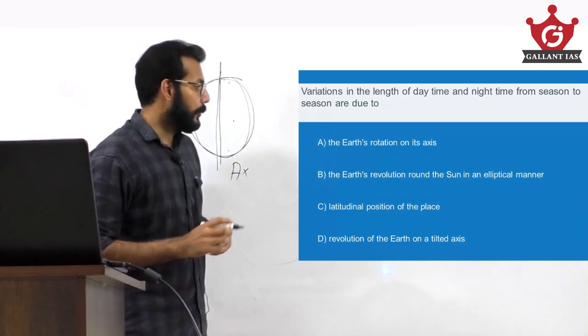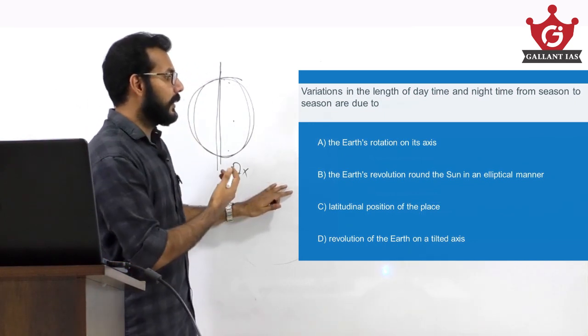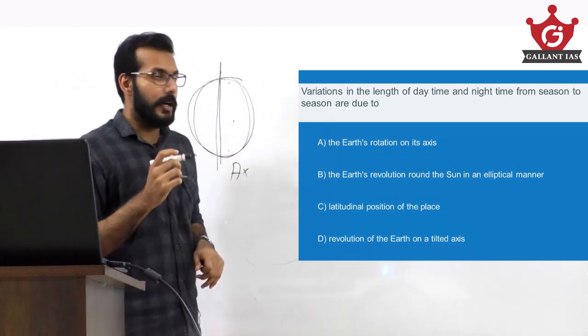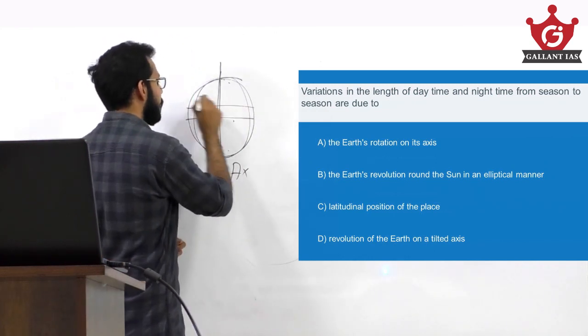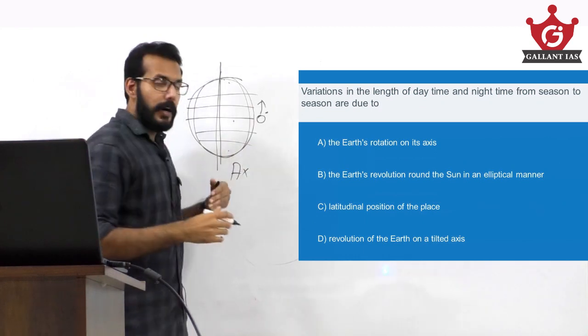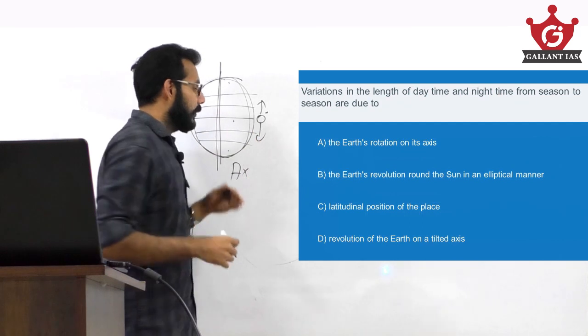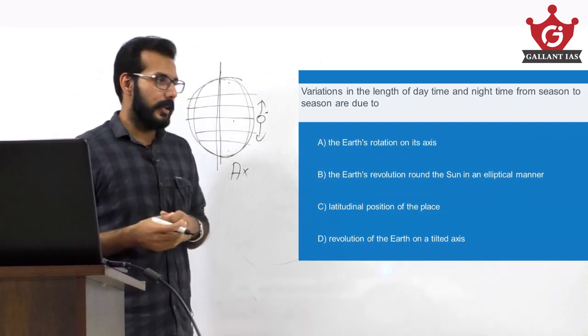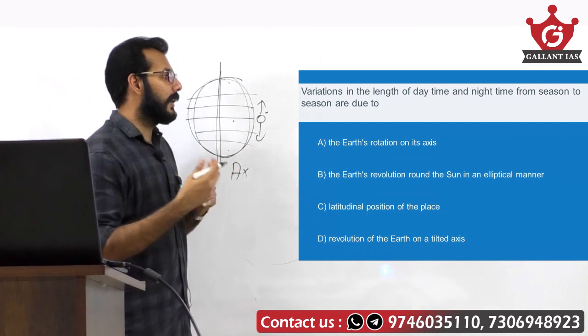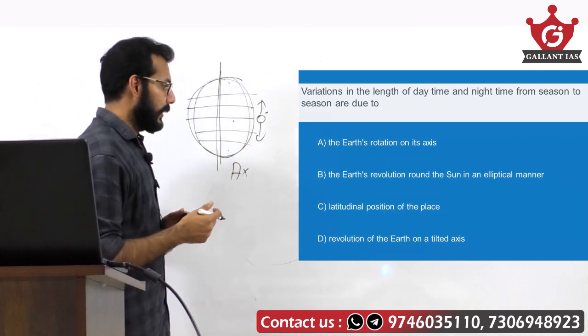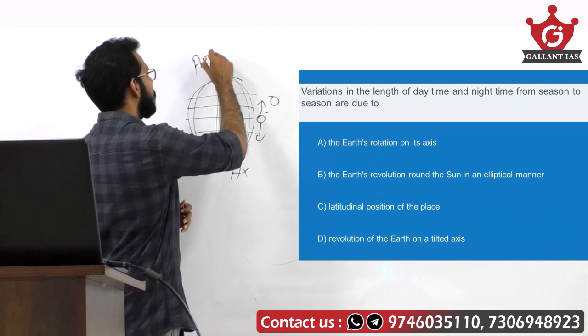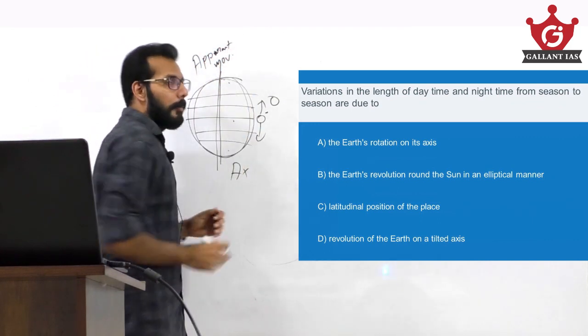Option B: the Earth's revolution around the Sun in an elliptical manner - let's keep that aside. Option C: latitudinal position of the place. Latitudes are imaginary lines going up and down from the equator - zero degree latitude, with degrees north and south. The latitudinal position of a place determines the day length and variation. That is a plausible conclusion considering the Sun's apparent motion up and down the latitude.